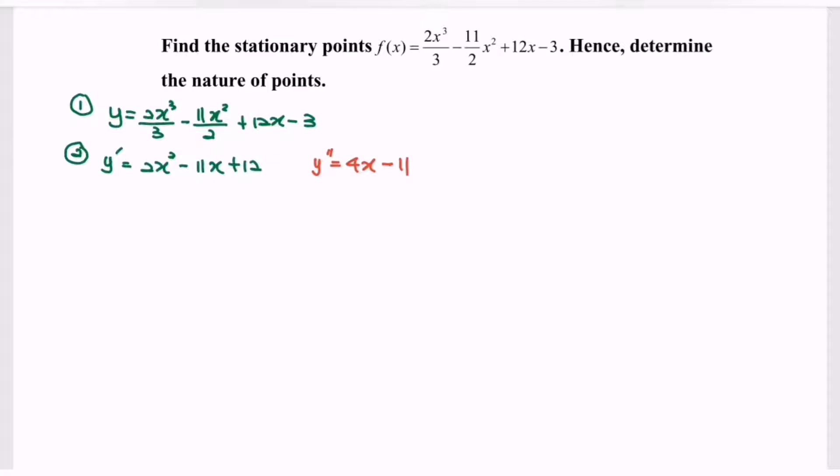Step number three, find the critical value or the critical point, where we have y prime equals 0. So kindly substitute the situation, 2x square minus 11x plus 12 equals 0. Kindly factorize the situation, and we will have x minus 4 multiplied with 2x minus 3 equals 0. So the value of x will be equals to 4, x will be equals to 3 over 2.